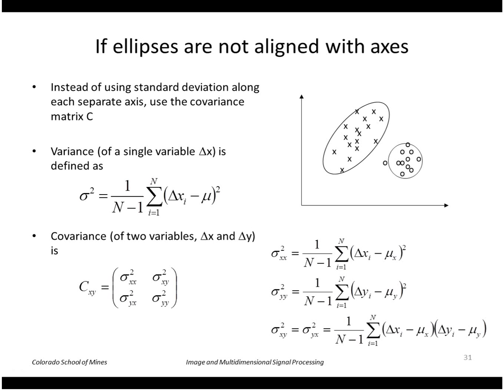If the ellipses are not aligned with the axes so they're correlated, then the dimensions are not independent and we can use the covariance. Recall that covariance is defined this way. For two dimensions it would be a two by two matrix, and the cross covariance would be the deviations of x and y multiplied together.